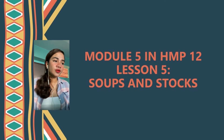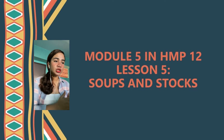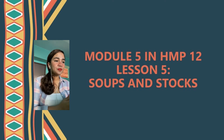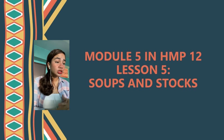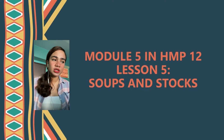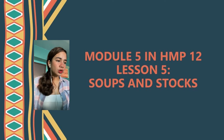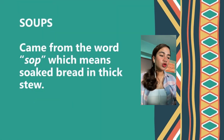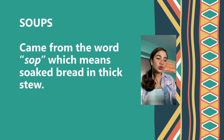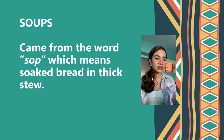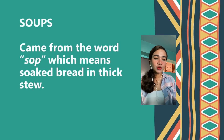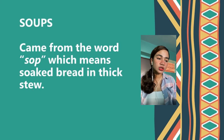Soup is often the first impression of a meal — it is an introductory item, often served as an indicator of what is to follow. Although they are usually served as an introductory item, they may also be served after a meal because of their versatility. Soups are liquid food that contains little solid ingredients. The word soups came from the word sop, meaning soaked bread in thick stew. The English word for the evening meal, supper, is derived from soup.